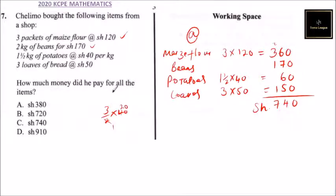So you check your answer: A is not correct—it's not 380. It's not B, 720. C is correct, 740. It's not D, 910. So the correct answer is C. That is the answer you choose. You'll get that correct.